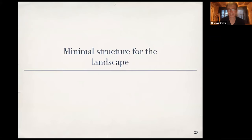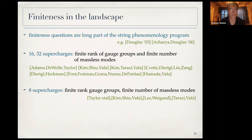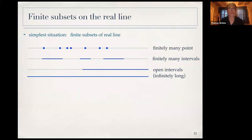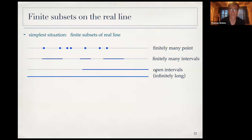In the last part of this talk, I want to suggest there is a general structure on the landscape — a tame topology. The idea is to introduce a simple notion of finiteness: on the real line, finite subsets are finitely many points or finitely many intervals. Functions like polynomials have only finitely many zeros, while a sine function would have infinitely many zeros. You want a structure where polynomials are fine but sine functions are not.